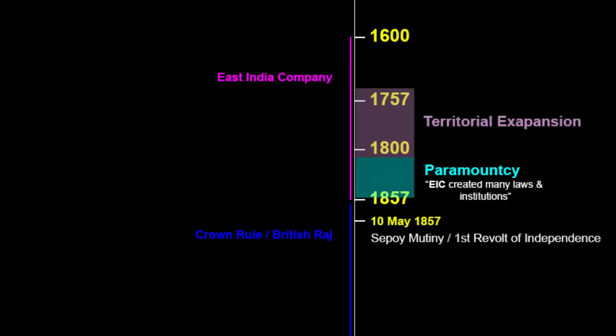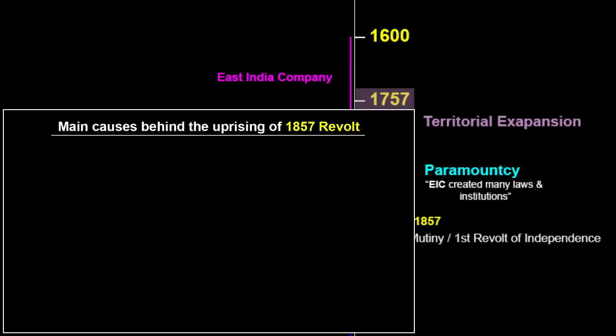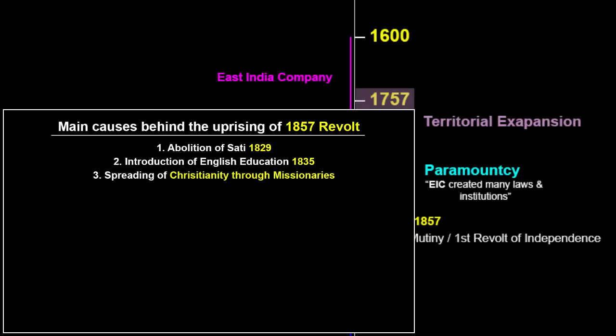After 1800, the British introduced the idea of Paramountcy and created laws making the East India Company's authority supreme. Many regulations made Indians upset: the Abolition of Sati in 1829, introduction of English Education in 1835, spreading of Christianity through missionaries, and the Doctrine of Lapse of 1848 — which annexed states with no successor. Due to this, many princely states like Jhansi, Satara, Udaipur, Jaipur, Sambalpur, Nagpur and others became victims of this policy. The rulers of these kingdoms rose in revolt against the company.